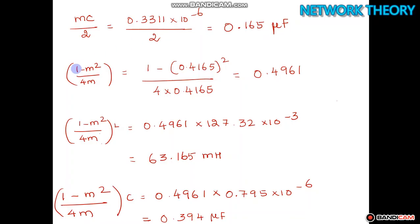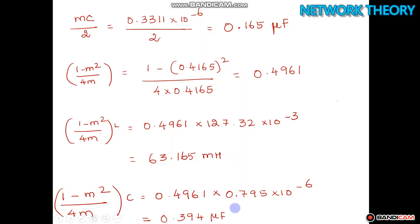Now find (1 - m²/4m) by substituting m = 0.4165, then multiply by L to get (1 - m²/4m)·L = 63.165 mH. Then multiply by C to get (1 - m²/4m)·C = 0.3964 μF.